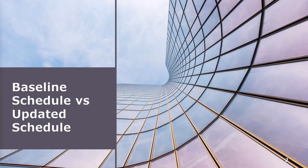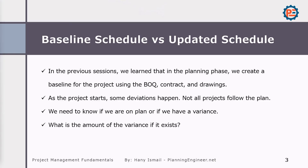Baseline schedule and updated schedule. In the previous session, we learned that in the planning phase, we create a baseline for the project using the bill of quantity (BOQ), contract, and drawings. As the project starts, some deviations happen. Not all projects follow the plan. So we need to know if we are on plan or if we have a variance, and what is the amount of the variance if it exists.